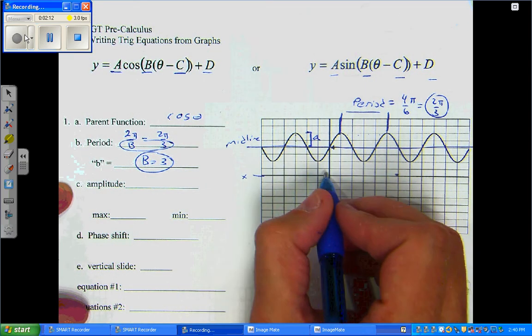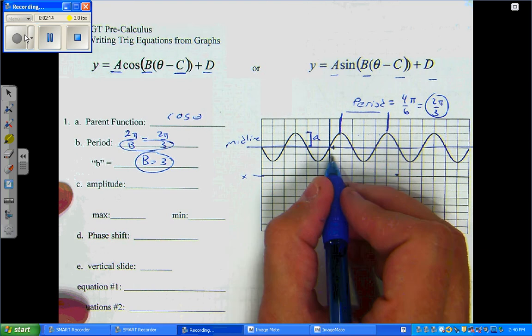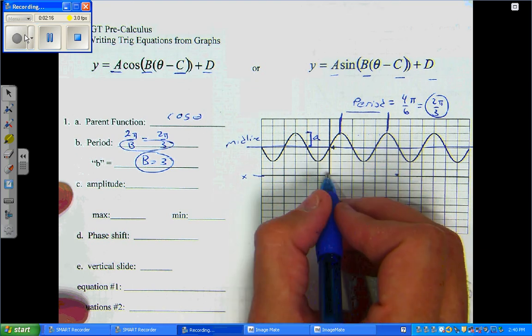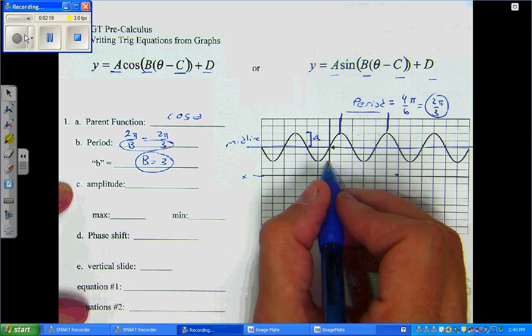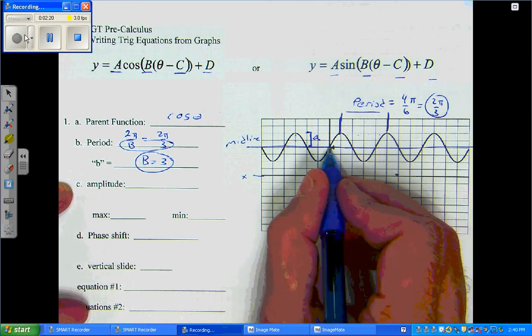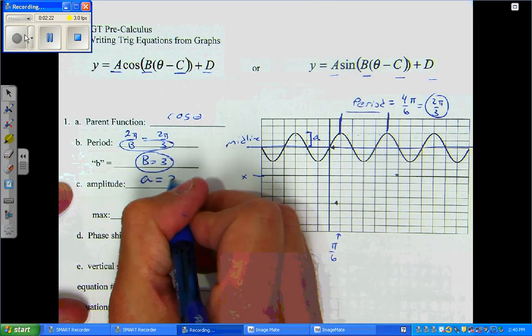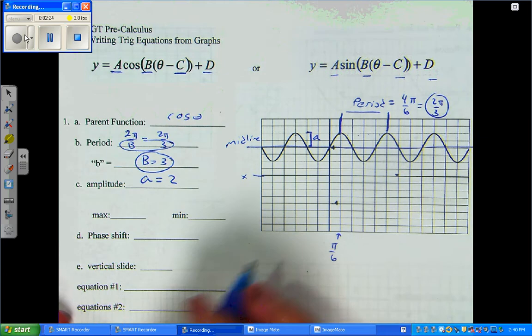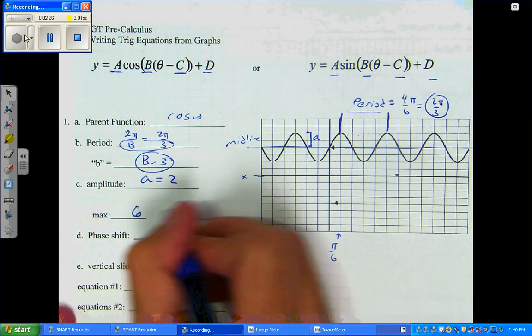Make sure your scale is correct. If this is my x-axis, this is the line y equals 4. So, each vertical tick mark is one unit. So, that gives me A equals 2. Which means my maximum will be 6 and my minimum will be 2.